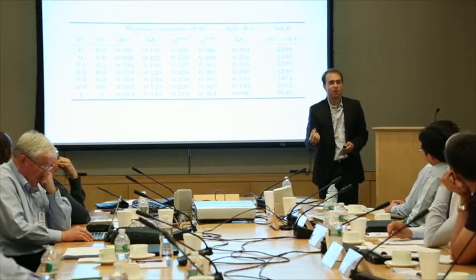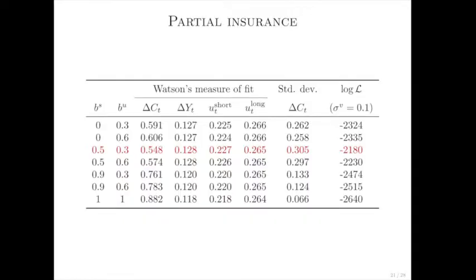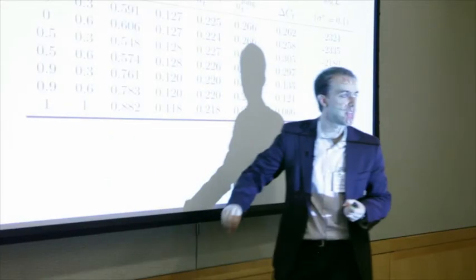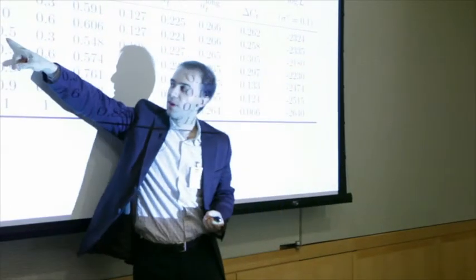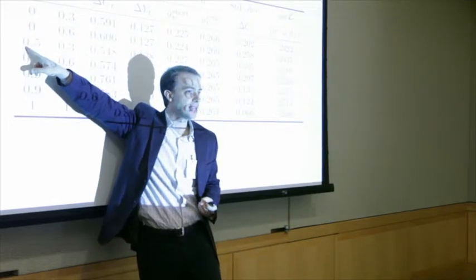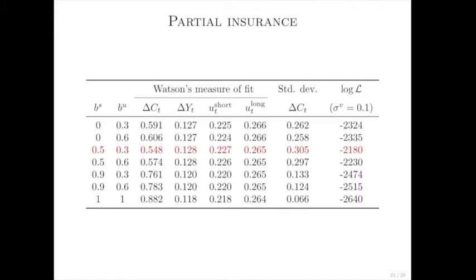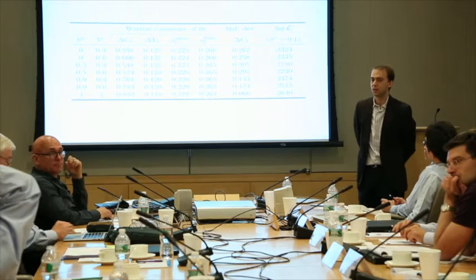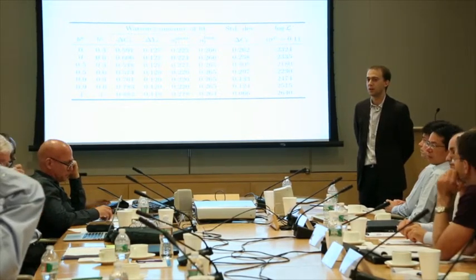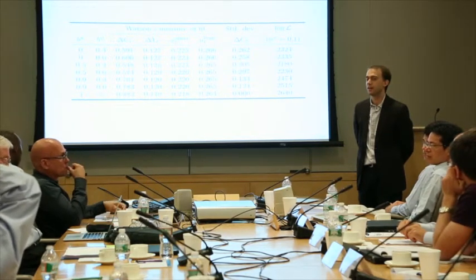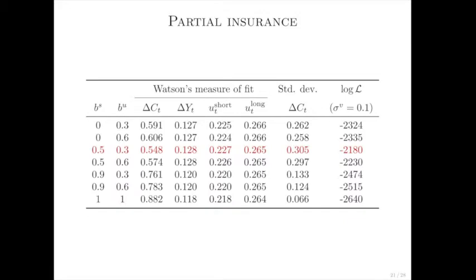Now, what about other forms of insurance — different combinations of the B parameters? Trying a whole range of combinations, the one that seems to work best has half of skill shocks insured, so B_S equals 0.5, but still a low degree of insurance against unemployment. An audience member notes that changing the B parameter would change the dynamics of household-level income — if you introduced an unemployment insurance system, it would change the dynamics of microeconomic income, so you can't change B and leave household-level income dynamics unchanged.